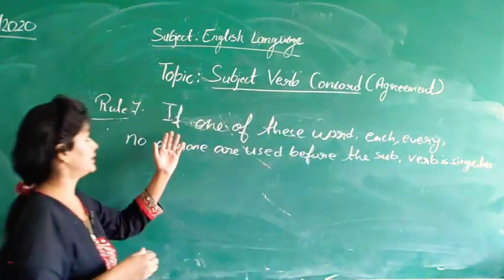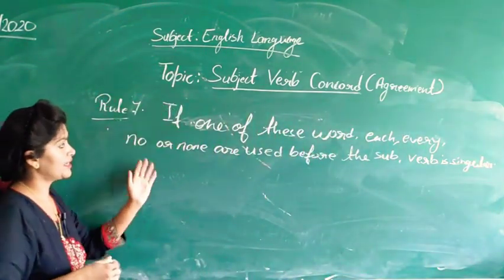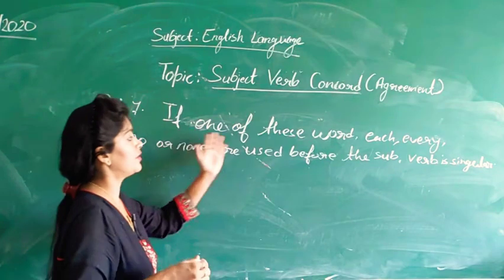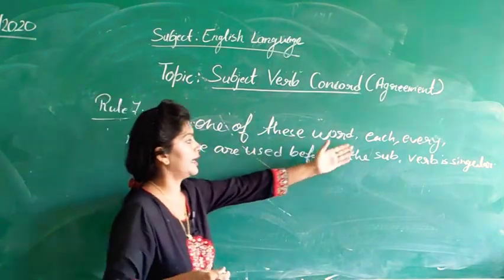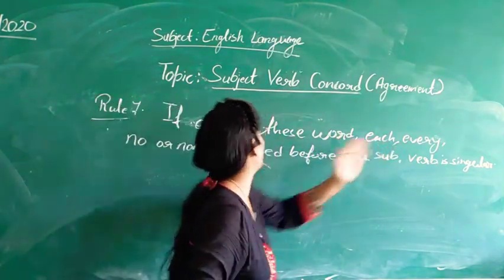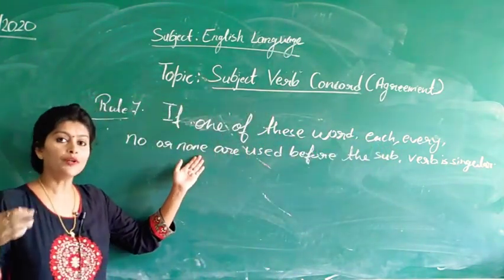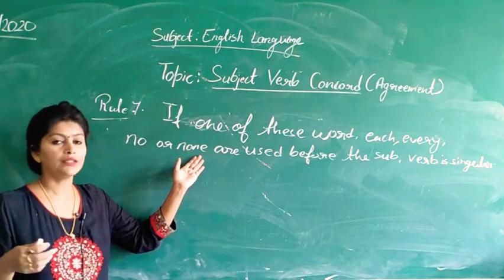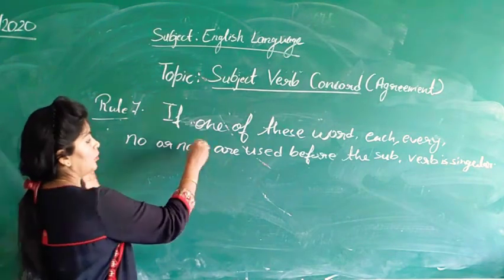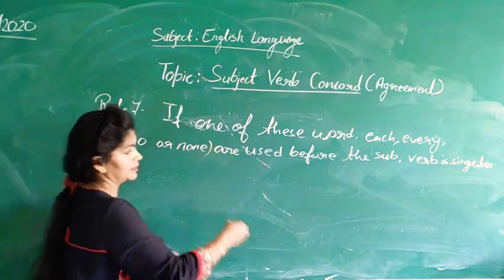So rule number 7 says: if one of these words — each, every, no, or none — are used, these are our quantifiers. We learn quantifiers in class as determiners.